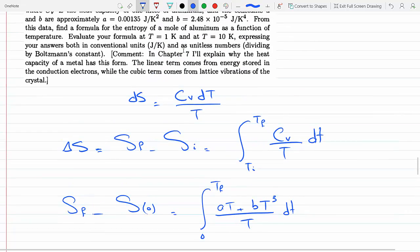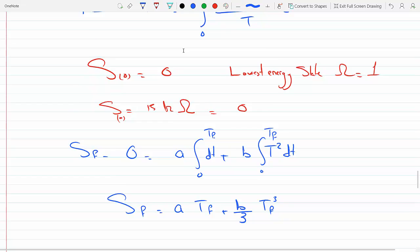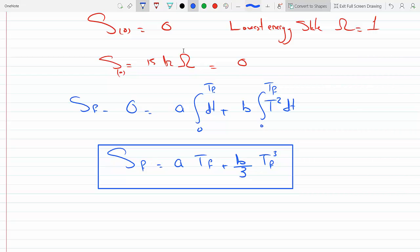From zero to T final, we would get a T final plus b over 3 T final cubed. This is a formula for the entropy of a mole of aluminum as a function of temperature. Now if we need to evaluate it at one kelvin, so if T final is one, we just plug in one.